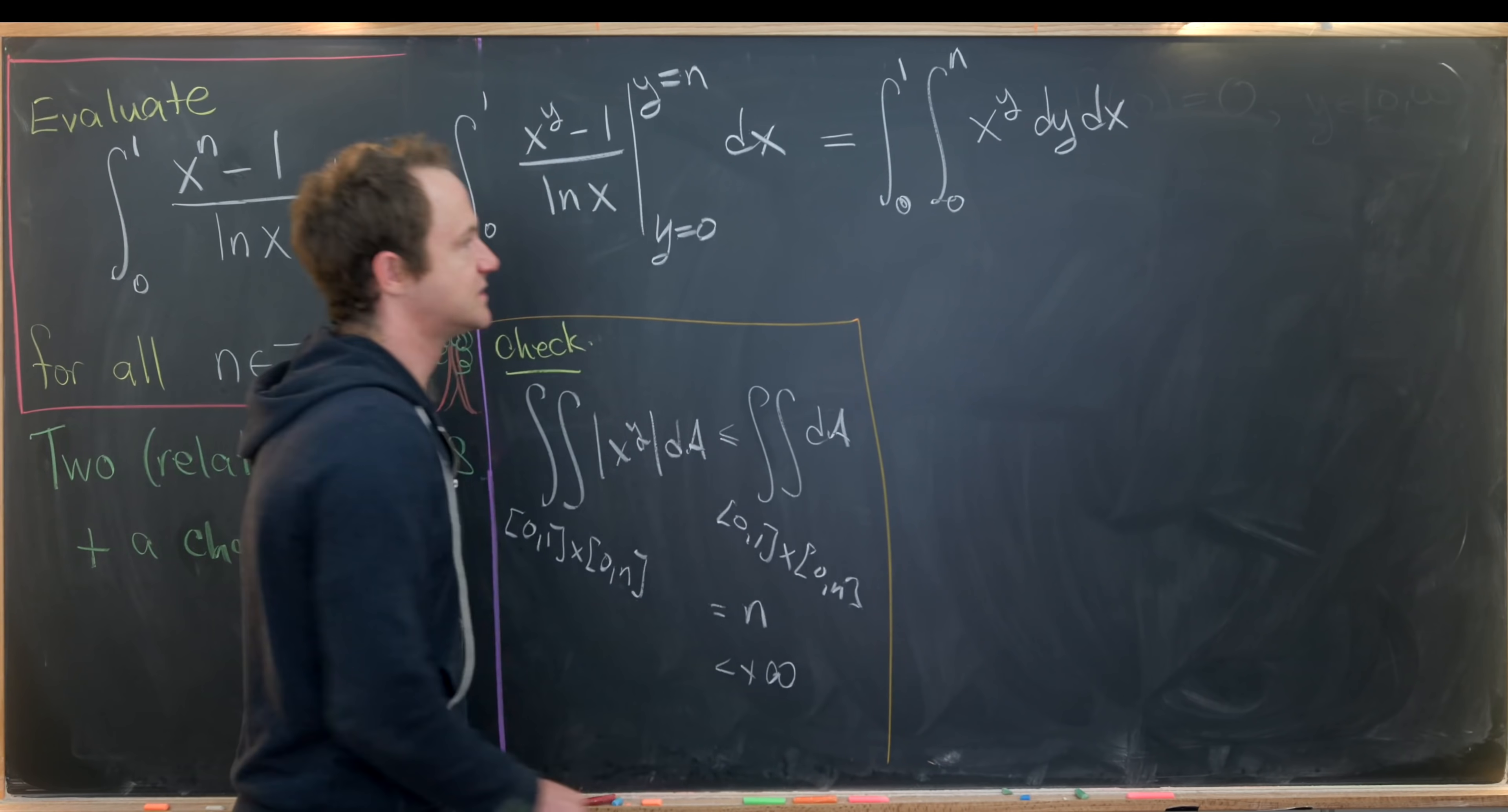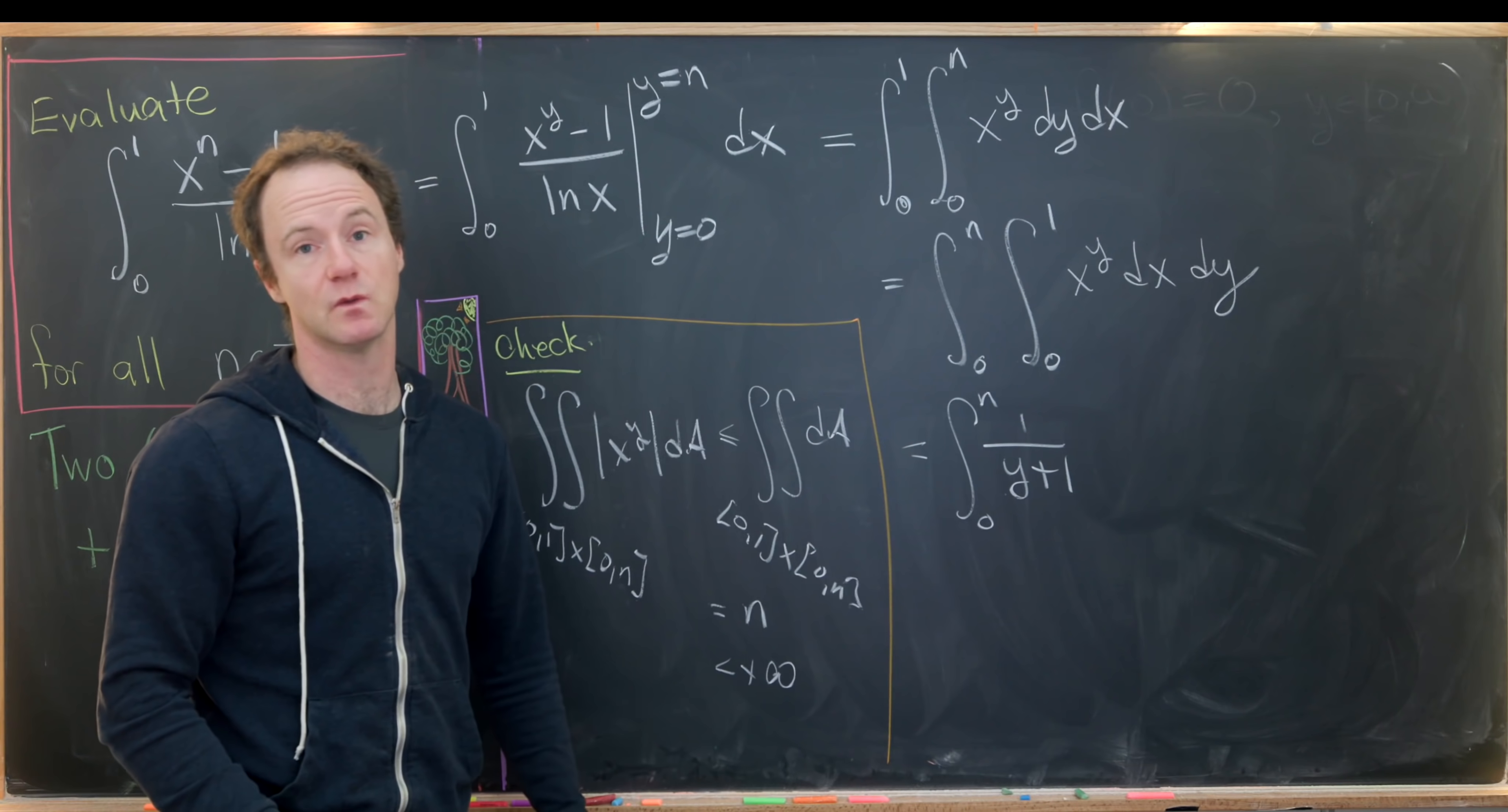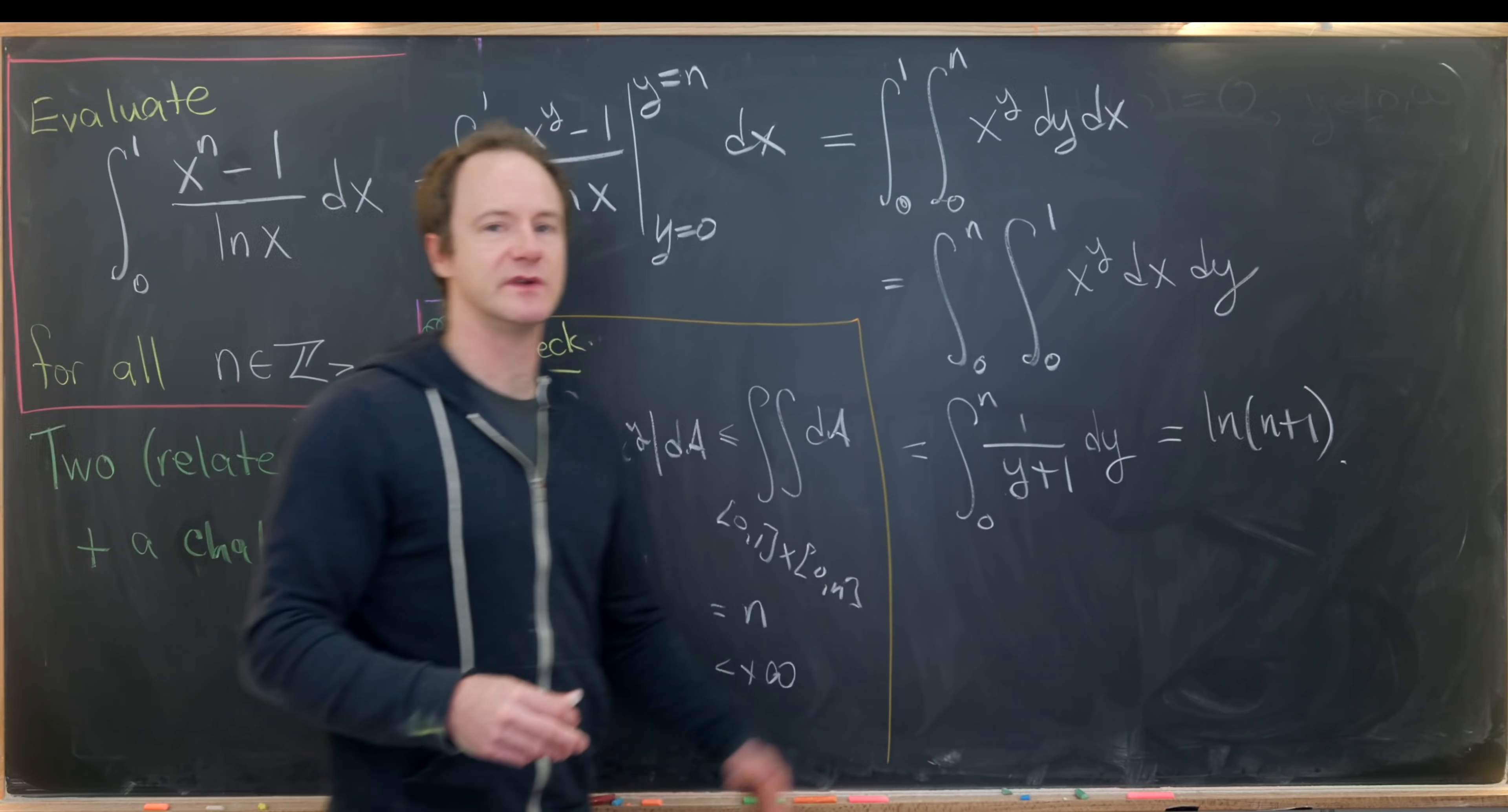So that means we're allowed to change the order of integration. So let's do that. So we've got the integral from 0 to n and then the integral from 0 to 1 of x to the y dx dy. And now we're essentially home free. Taking that inside integral, we'll get 1 over y plus 1 times x to the y plus 1 evaluated from 0 to 1. That'll just give us 1 over y plus 1. And then we'll have dy here. And then taking the antiderivative of this, we'll get the natural log of y plus 1 evaluated at the upper bound, we'll give us natural log of n plus 1. Evaluating at the lower bound, we'll get the natural log of 1, which is 0. So we end up with the same solution, which we should because we're doing the same problem.